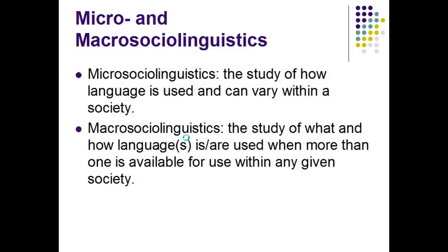Our examination this week and next week of the linguistic variable will venture into the realm of micro sociolinguistics — the study of how language is used and can vary within a society. This is contrasted with macro sociolinguistics, which has been our primary focus up to this point. Macro sociolinguistics is the study of what and how languages are used when more than one is available within any given society. During the next two weeks, we will be hearing from different authors concerning various social phenomena and the linguistic variance associated with those phenomena.